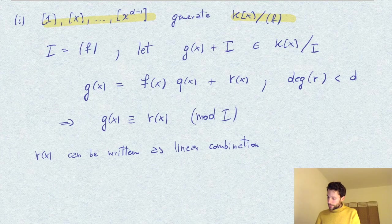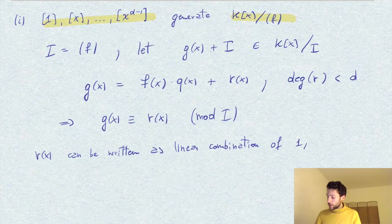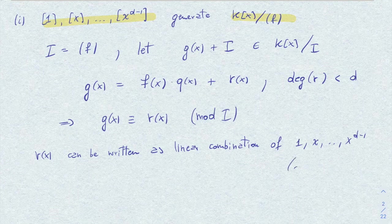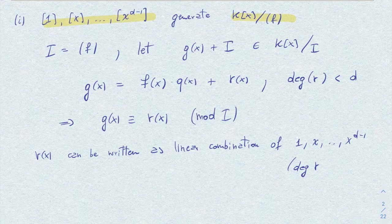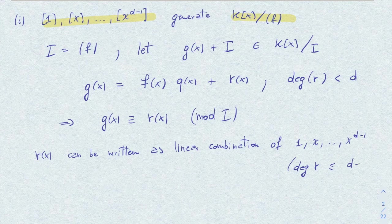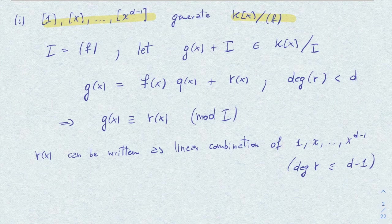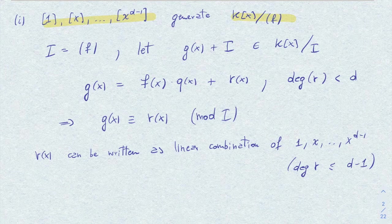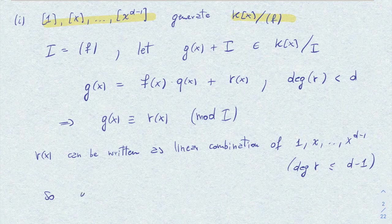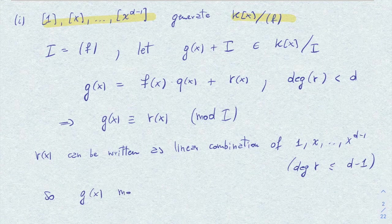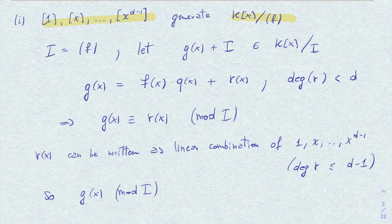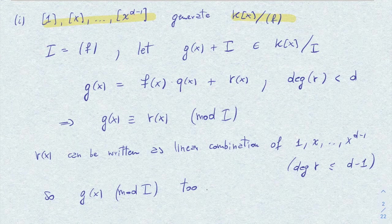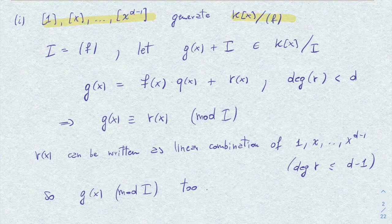A combination of 1, x, ..., x^(d-1), just by the fact that the degree of r is less than or equal to d-1. Therefore, in the quotient, so mod I, g(x) mod I can be written as such a combination. This proves that these elements are a generating set.